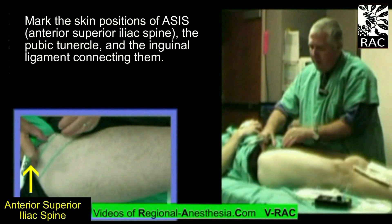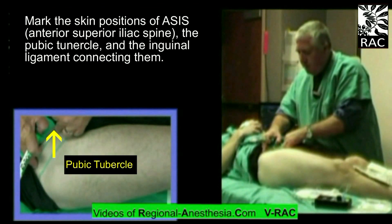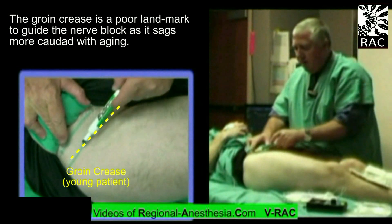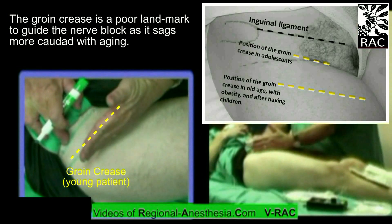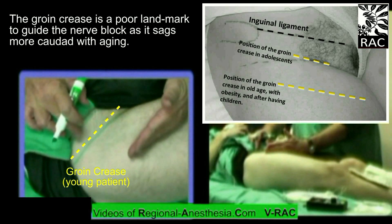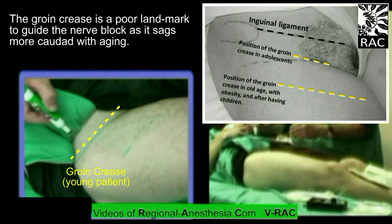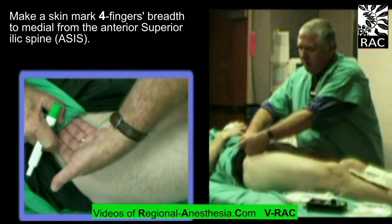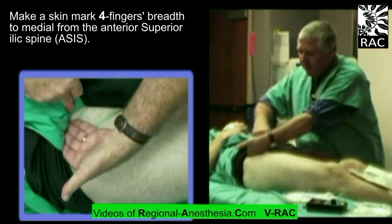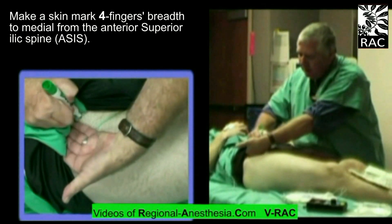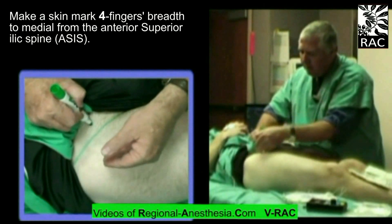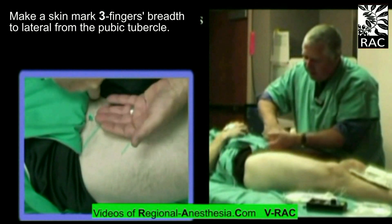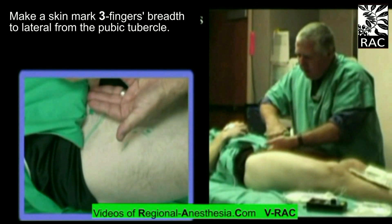We identify the anterior superior iliac spine here and the pubic tubercle here. We join the two together with a line to indicate the inguinal ligament. The groin crease is marked — in older patients it can be 15 centimeters further down the leg, so using it would result in a mid-thigh femoral nerve block that would be very incomplete. For the 4-3 finger landmark method, place one finger on the anterior superior iliac spine, measure four fingers medially two centimeters caudal to the inguinal ligament, and mark the needle insertion point. Verify by measuring three fingers lateral from the pubic tubercle.